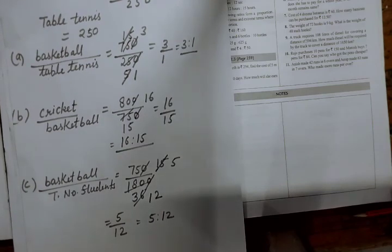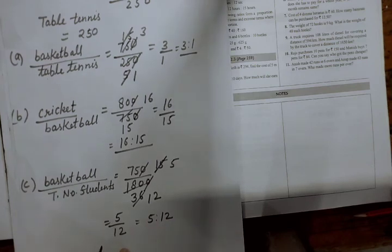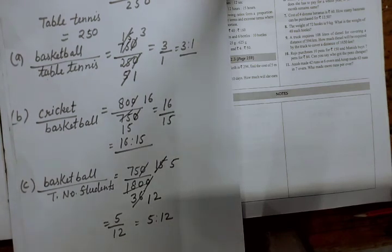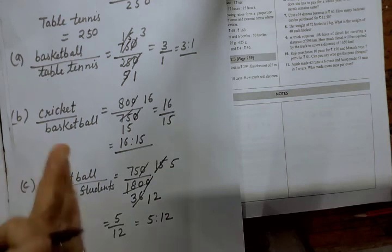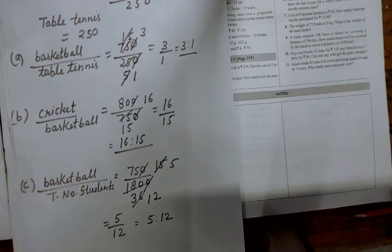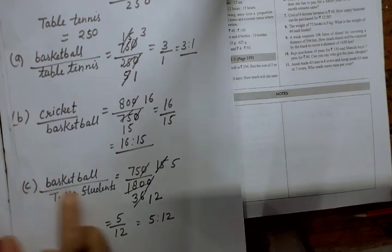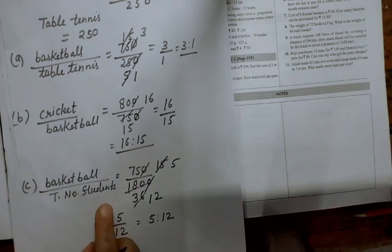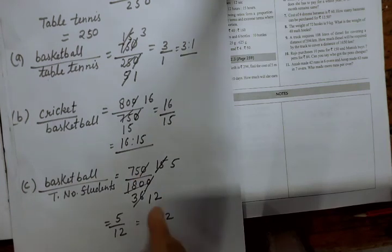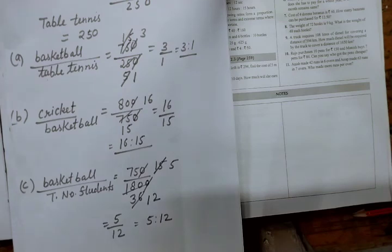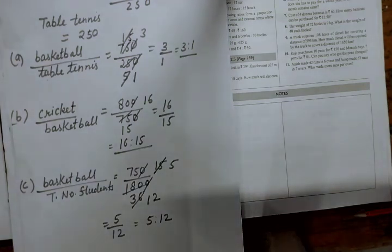So this is the solution for these questions. Whatever sports are given, first write down the numbers, then form the ratio with numerator and denominator in the given form, and the ratio will be found this way. Thank you.